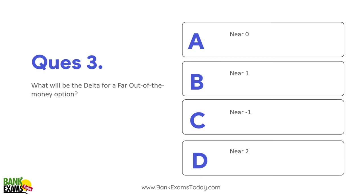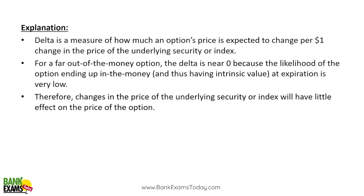Question 3: What will be the delta for a far out-of-the-money option? To understand this, first let's understand what delta is and what a far out-of-the-money option is. Delta is a measure of how much an option's price is expected to change per ₹1 change in the price of the underlying security or index.